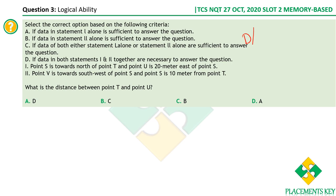The next question is also data sufficiency-based, this time on directions. The approach: read the question, try statement one alone, then statement two alone, then combine if needed. The question asks: what is the distance between point T and point U?